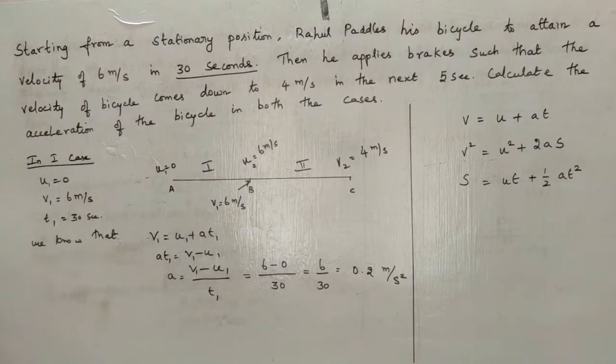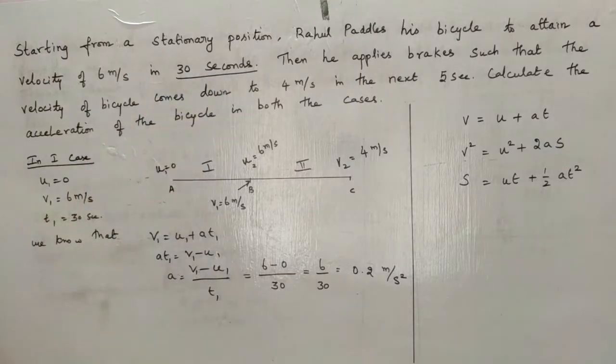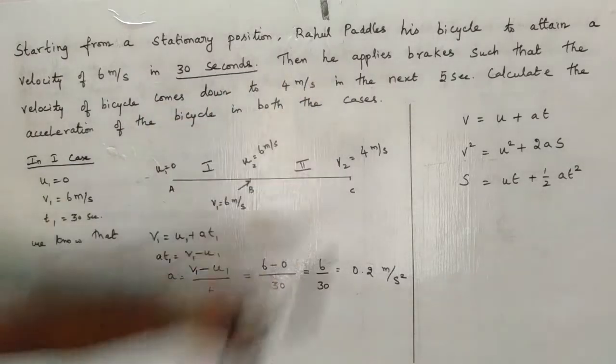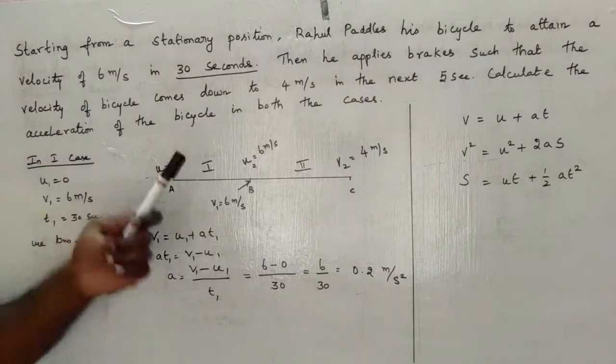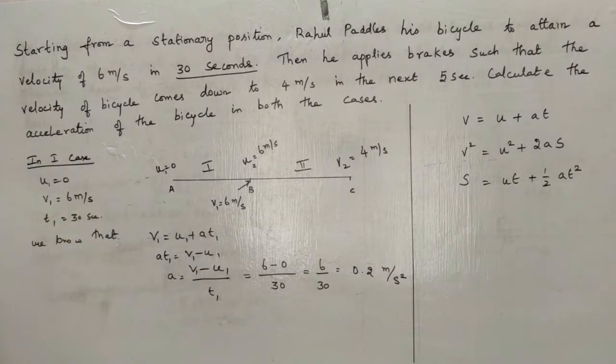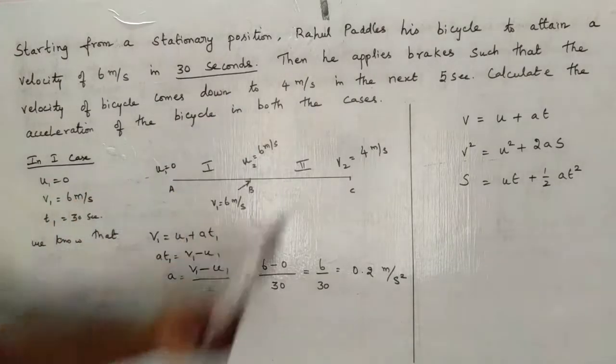Starting from a stationary position, Rahul paddles his bicycle to attain a velocity of 6 meters per second in 30 seconds. Then he applied brake such that the velocity of bicycle comes down to 4 meters per second in the next 5 seconds. Calculate the acceleration of the bicycle in both the cases.